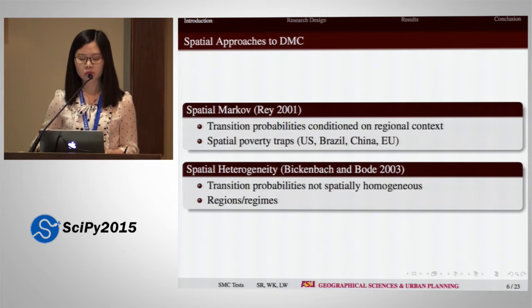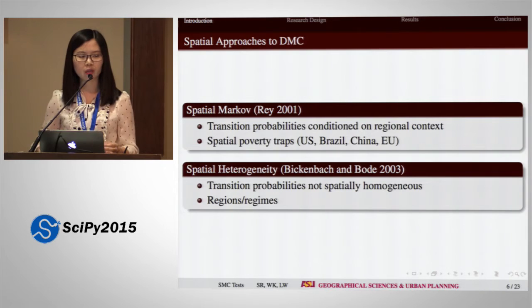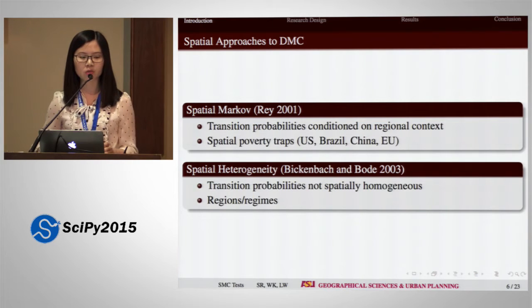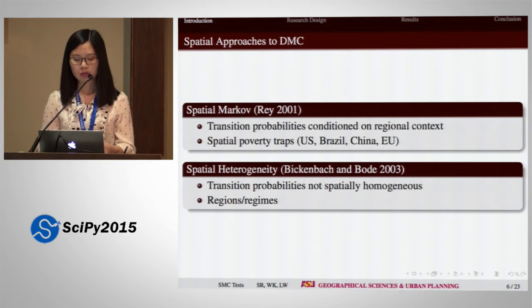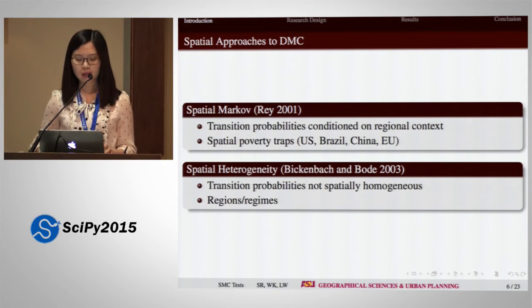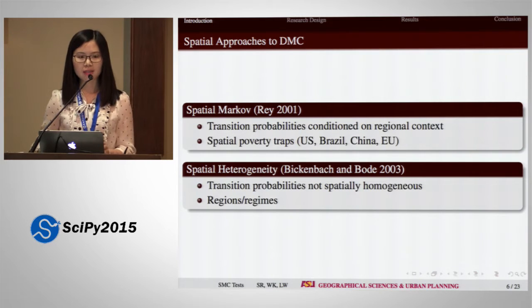Several approaches have been proposed to integrate spatial effects in discrete Markov chain models. The Spatial Markov model was proposed by Dr. Ray to integrate spatial dependence. Rather than only one transition probability matrix, Spatial Markov posits several different transition probability matrices governing distribution dynamics, conditioned on regional context such as neighbors. In Spatial Markov, poor economies with poor neighbors have a lower probability of moving upward compared to those with rich neighbors, resulting in spatial poverty traps. Spatial heterogeneity can be introduced by estimating different transition probability matrices for different spatial regimes.